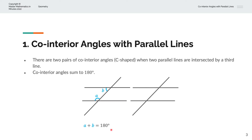The second pair is where we label this angle as C, and the co-interior angle is here, and we can call that D. And once again, it traces out a C-shape: horizontal line, vertical line, and horizontal line again. And C plus D is equal to 180 degrees.